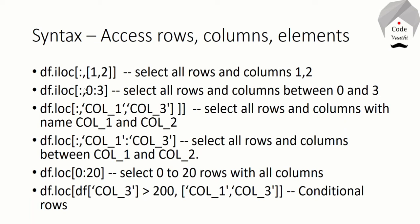If we open a square bracket, we will display a comma separator. This is the column name — that is the main note. If we specify the column name, that is how many columns we can specify. If we choose a column name, we will specify it. If we open a column name, we will run the column name.